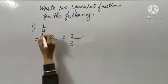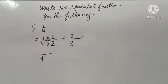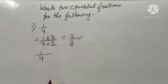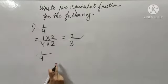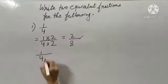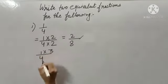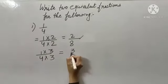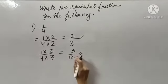Now for the second equivalent fraction, again I have to write 1 upon 4 and again I will be multiplying my numerator as well as my denominator with any number of my own choice. I can multiply with 3, 4, 5, 6 — any number of my own choice. But right now I am multiplying my numerator with 3 as well as my denominator with 3. So 1 times 3 are 3, and 4 times 3 are 12. This is my second equivalent fraction.